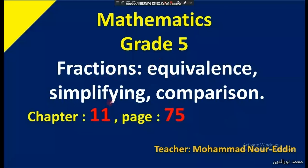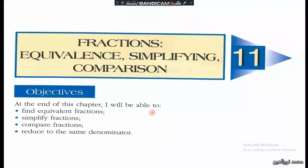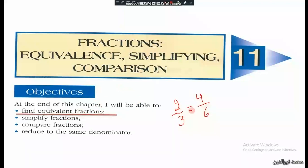Fractions: equivalence, simplifying, and comparison — Chapter 11, page 75. The objectives of this lesson are to find equivalent fractions. If you have a given fraction, you have to find a fraction that equals it. For example, 2 over 3 equals 4 over 6, and we will check how to find these fractions.